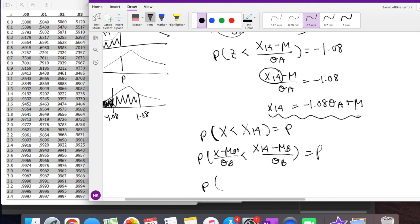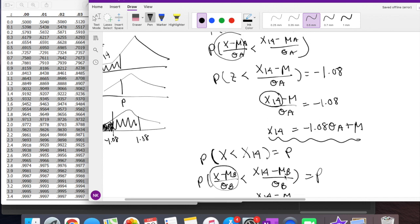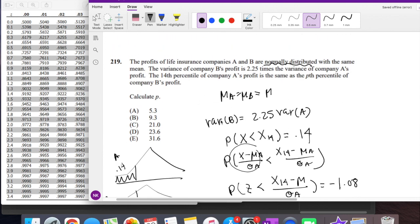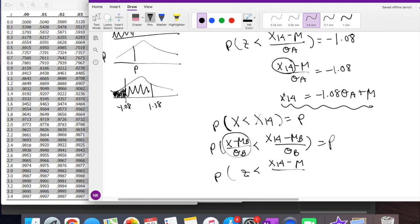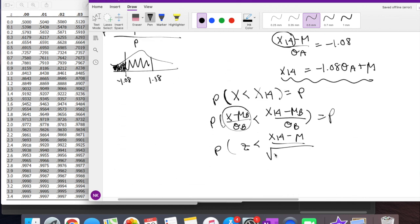All right, so this is just the definition of Z. Z is less than X 14th minus mean of B. We know all means are the same. And then standard deviation of B. So if this is variance, the standard deviation of B is just the square root of 2.25 times the variance of A. Okay, so let's put that in there. Square root of 2.25 times the variance of A is equal to P.